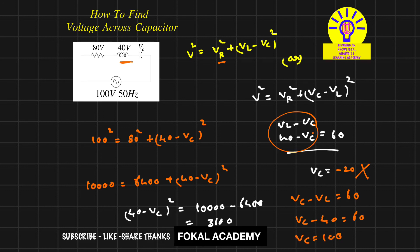Therefore, VC equals 100 volts. The voltage drop across the capacitor is 100 volts, and this is the correct answer for the given problem. This is the process of simplification. Thanks for watching, please subscribe, like, and share.